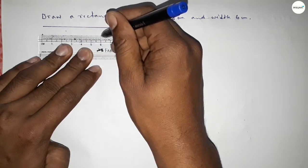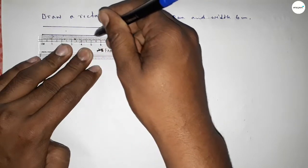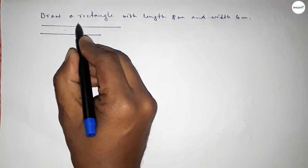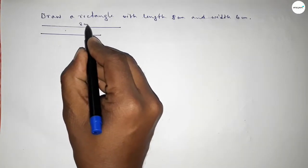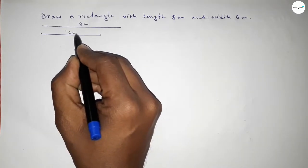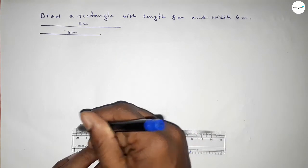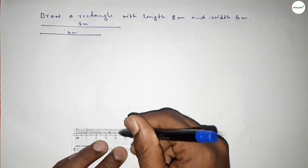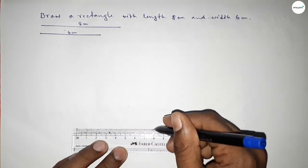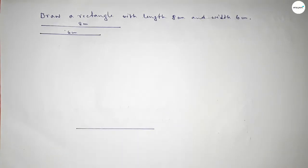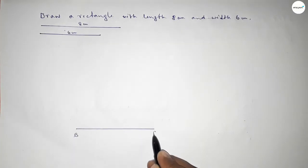This one is 8 centimeters and this one is 6 centimeters. Now we have to draw a line of length 8 centimeters first. This is 8 centimeters, taking here point B and here point C.